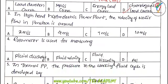Third question: in a high-head hydroelectric power plant, please ignore any spelling or writing mistakes — the velocity of water flow in a penstock is around 7 meters per second.